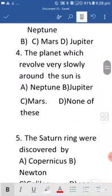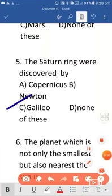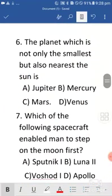Next is the Saturn rings were discovered by, so it is discovered by option C, Galileo. Next is which planet, sorry, the planet which is not only the smallest but nearest the sun is, that is option B, Mercury.